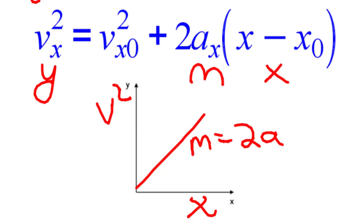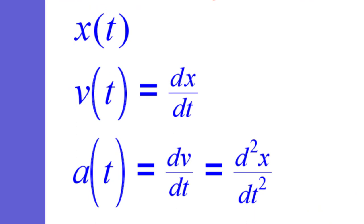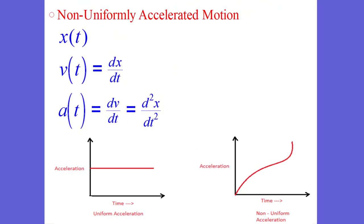We can also take a look at non-uniformly accelerated motion, when our acceleration is actually changing. When acceleration is constant, we call that uniform acceleration; when it's not constant, we call that non-uniform acceleration. In that case, we go to our calculus. The velocity-time function is the derivative of position with respect to time, and the acceleration-time function is the derivative of velocity with respect to time, or the second derivative of position with respect to time.